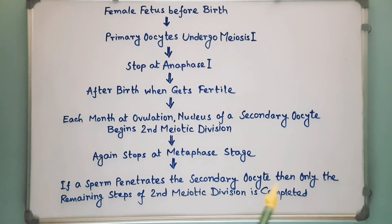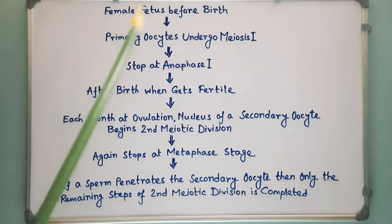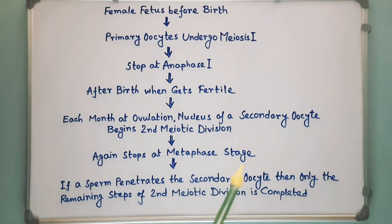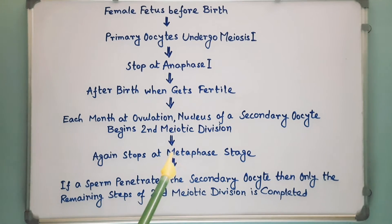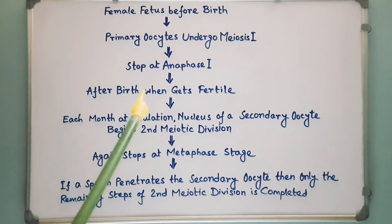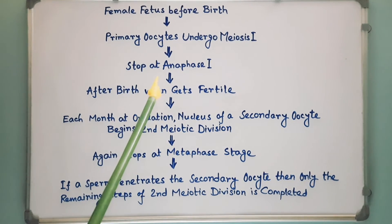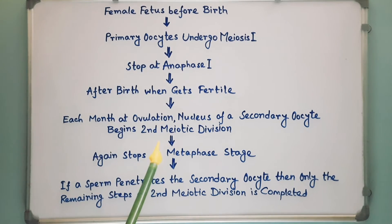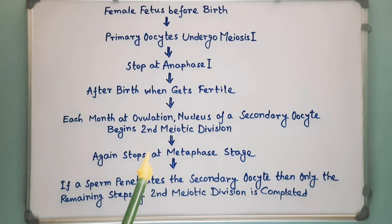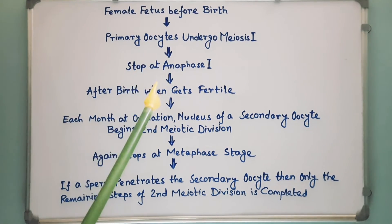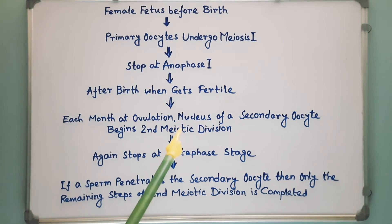So, you can understand that females take a long time to complete the meiotic cell division during oogenesis. As a result, the chromosomes sometimes fail to separate during either the first meiotic cell division or the second meiotic cell division. That's why aged women spend a long time to complete meiotic cell division and have a higher risk to produce aneuploid eggs than younger women.